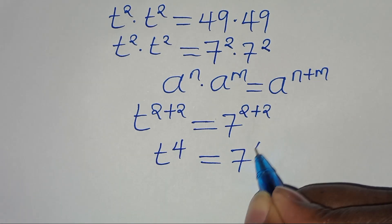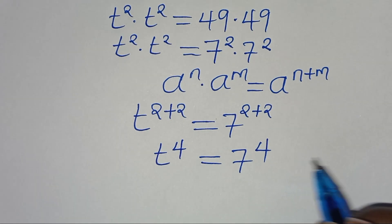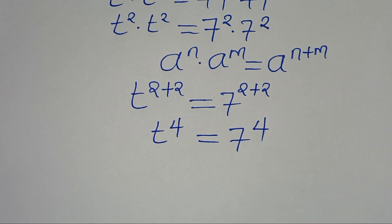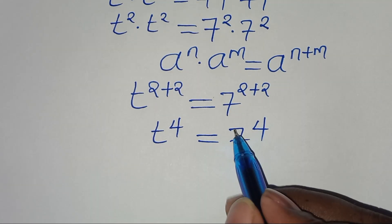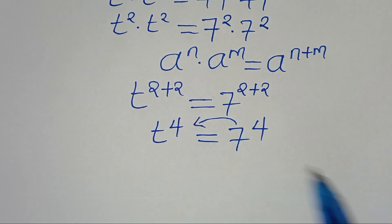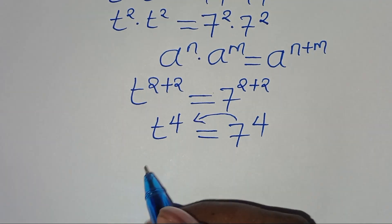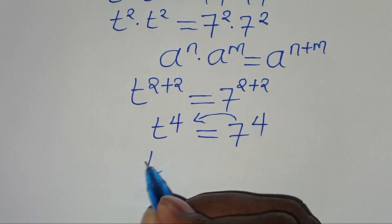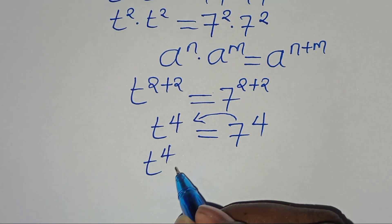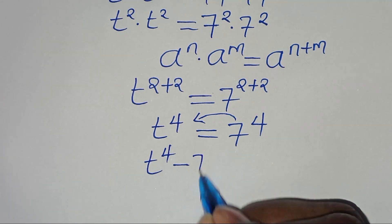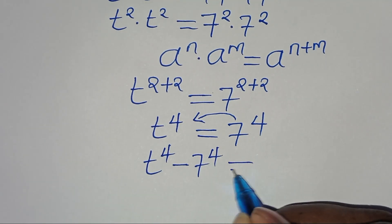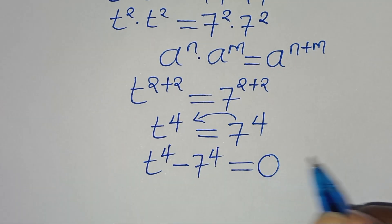Therefore we have t to the power of 4 equal to 7 to the power of 4. The next step is to bring 7 to the power of 4 to the left-hand side, so we have t to the power of 4 minus 7 to the power of 4 equals 0.